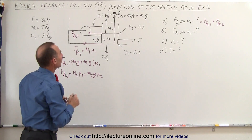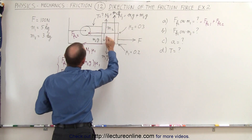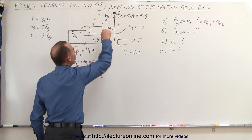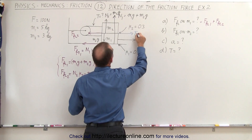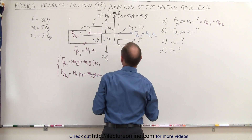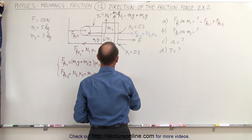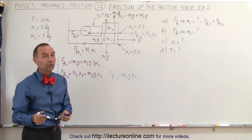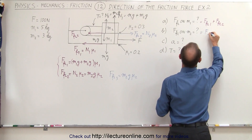What about the friction force on m2? Notice m2 will be accelerating in this direction. The friction force acting on m2 is in the opposite direction, giving us a third friction force. Friction force 3 equals N2 times μ2, which is m2g × μ2 — the exact same magnitude as friction force 2 but opposite in direction.